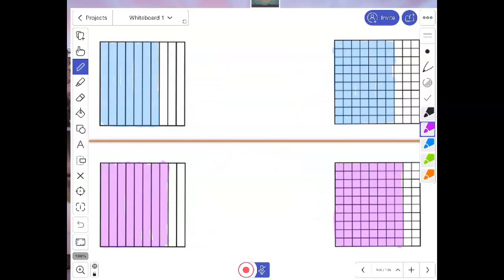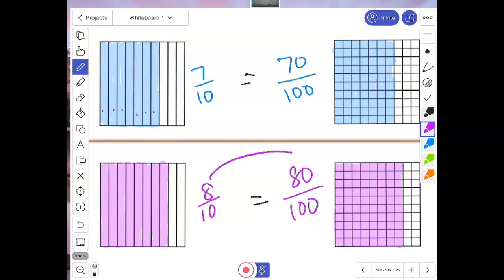Here I know that I have one, two, three, four, five, six, seven tenths, and I know that that's going to be equivalent to seventy hundredths. Down here I have eight tenths, which will be equivalent to, say it with me, eighty hundredths. Are you seeing the same pattern for every single one of these? I am.